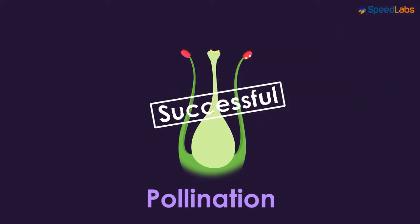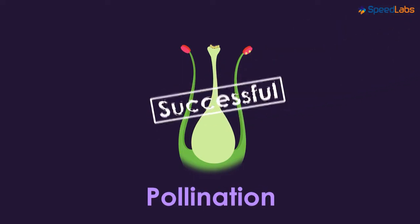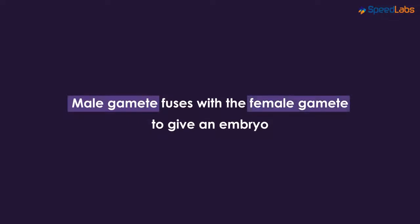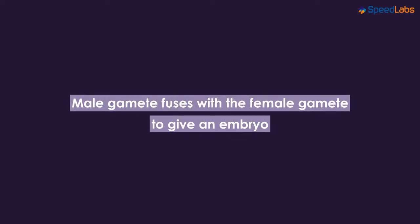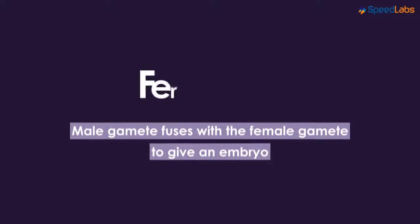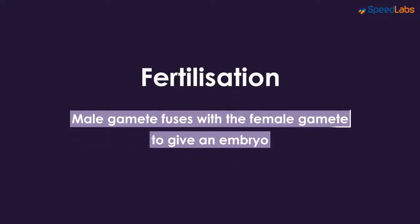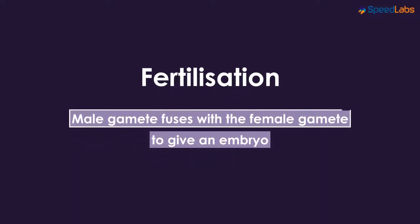If pollination is successfully carried out, then the male gamete will fuse with the female gamete giving rise to an embryo formation. This process is called fertilization. It is the process that involves the fusion of male and female gametes to give rise to an embryo.